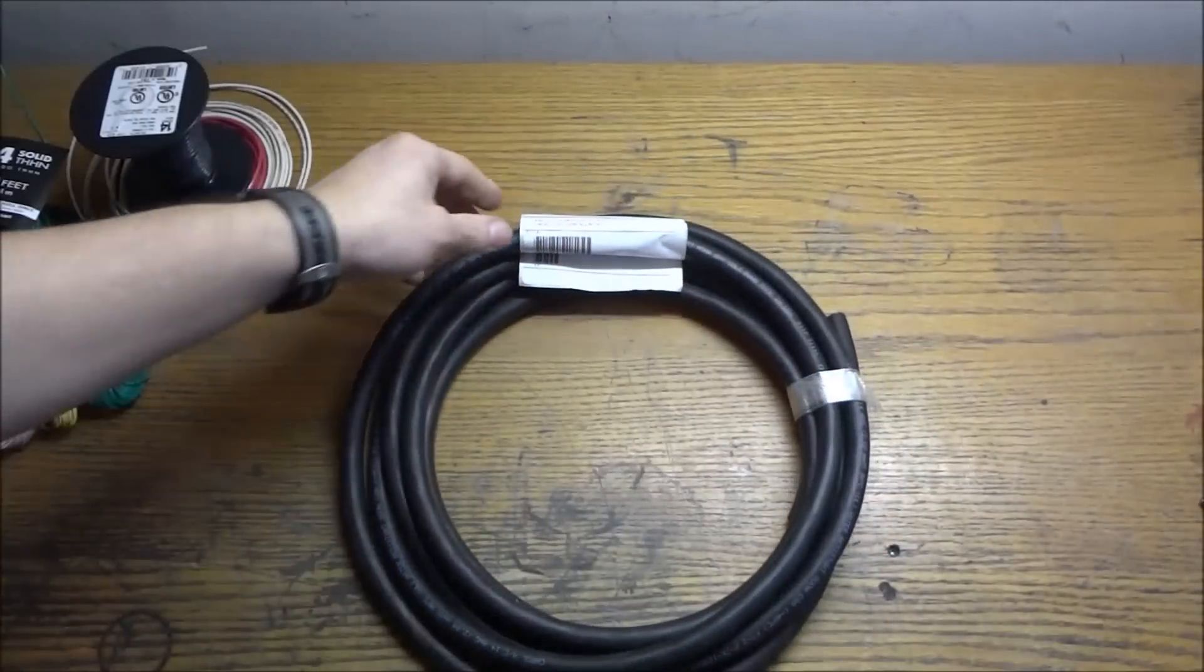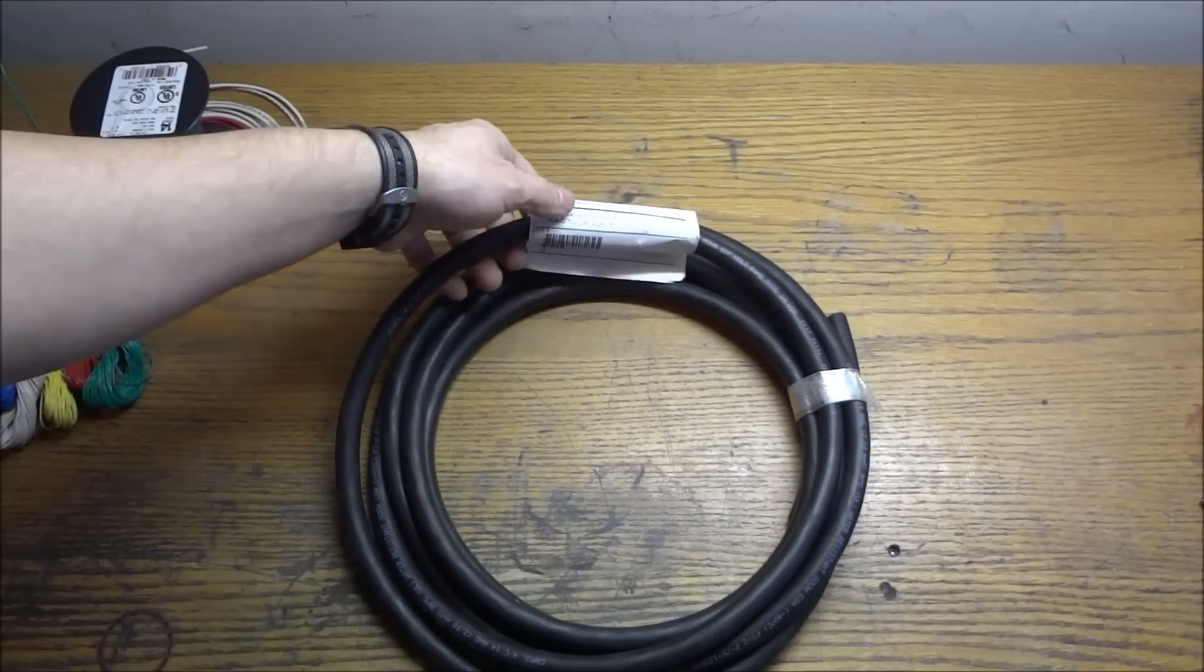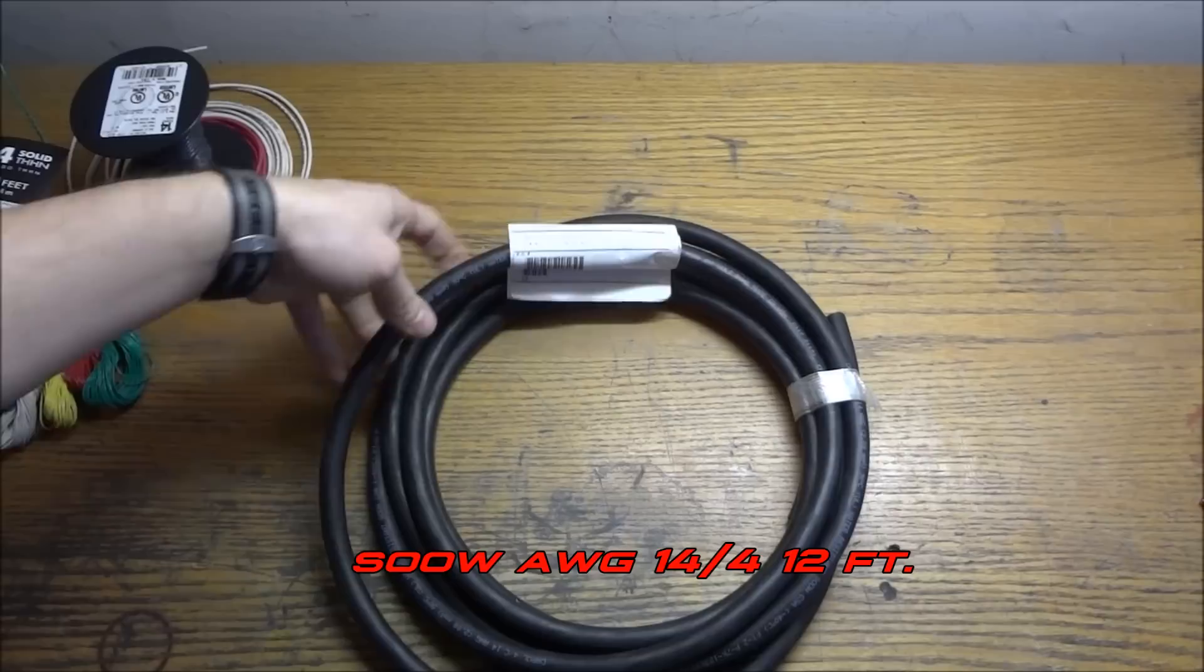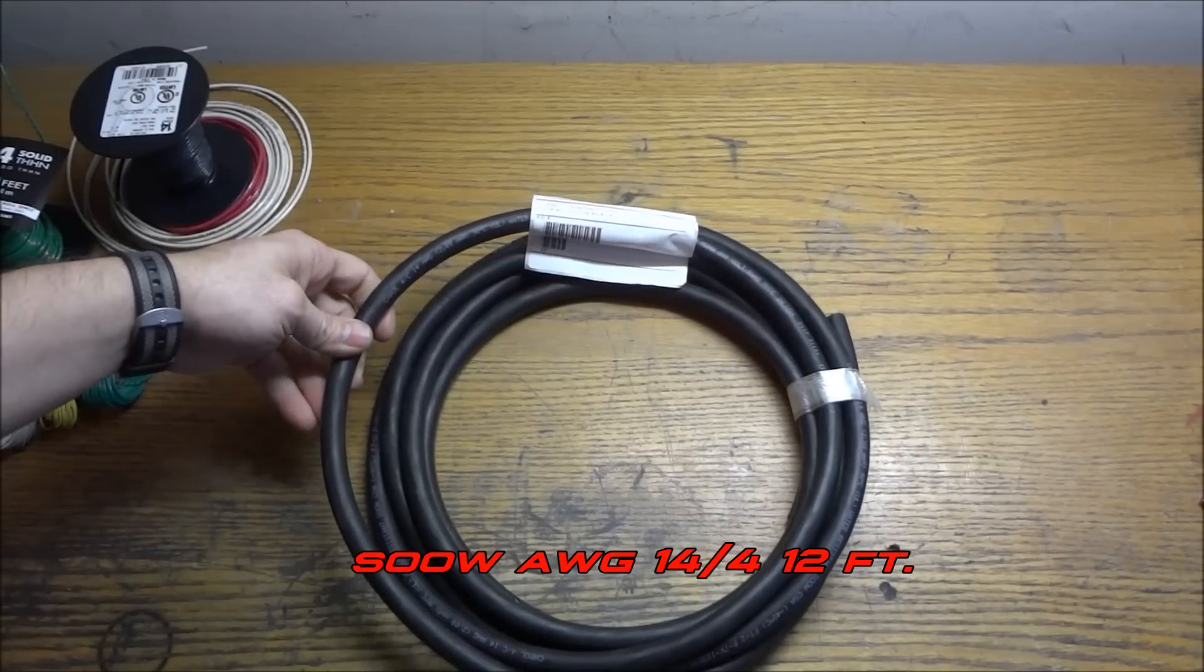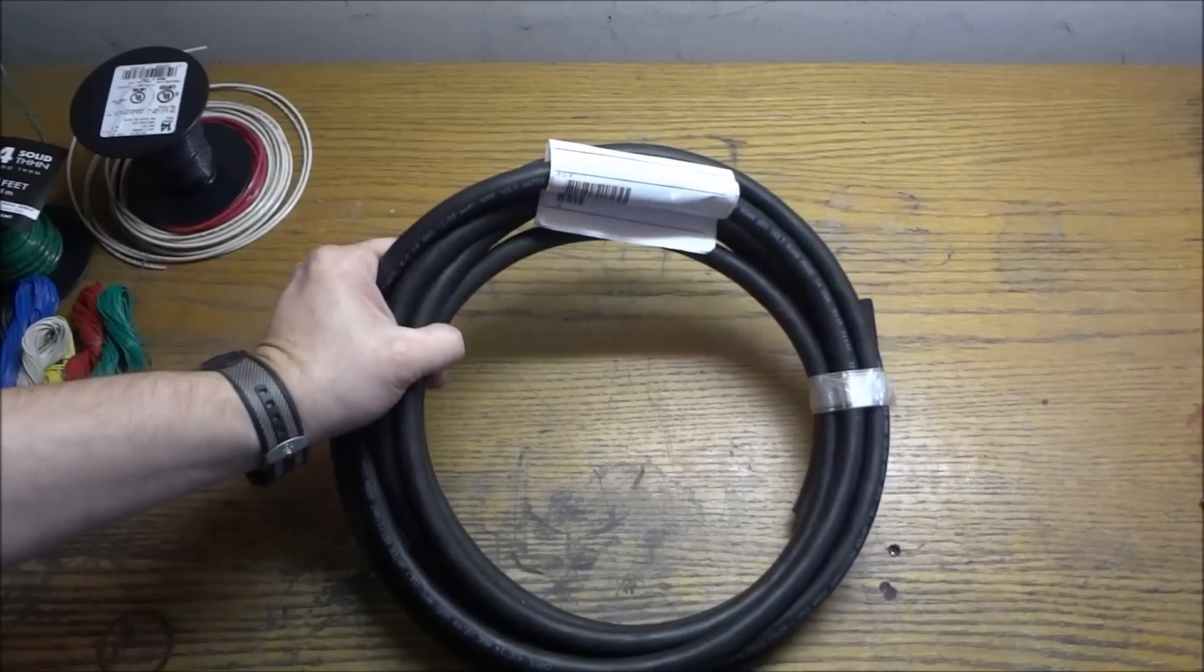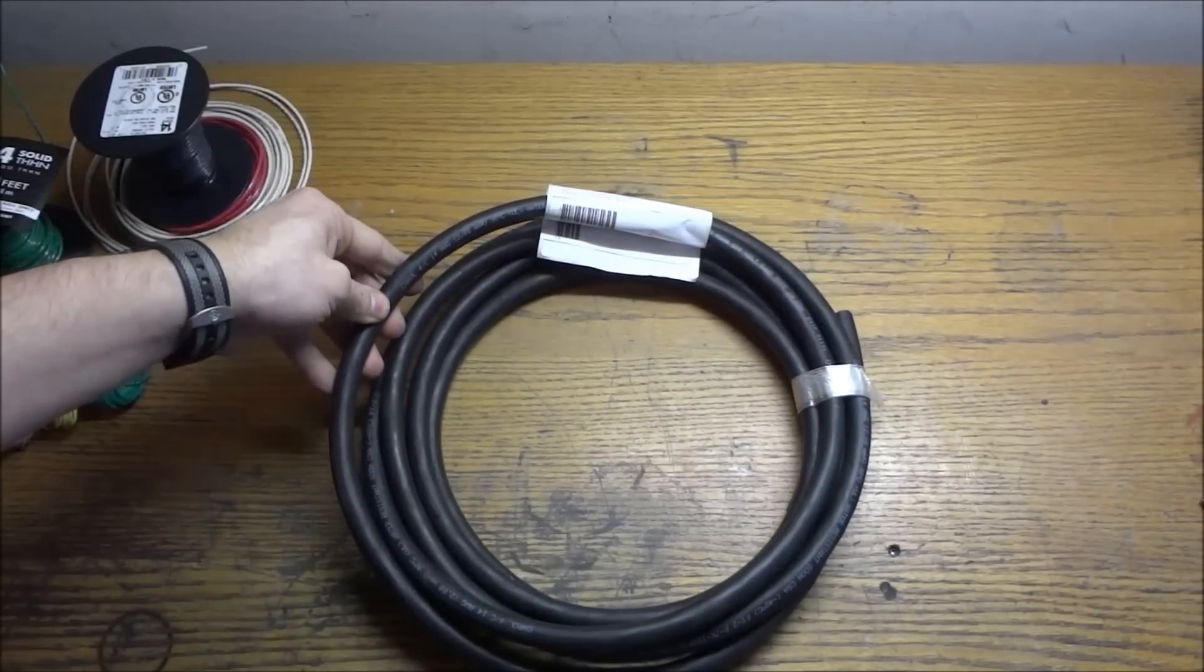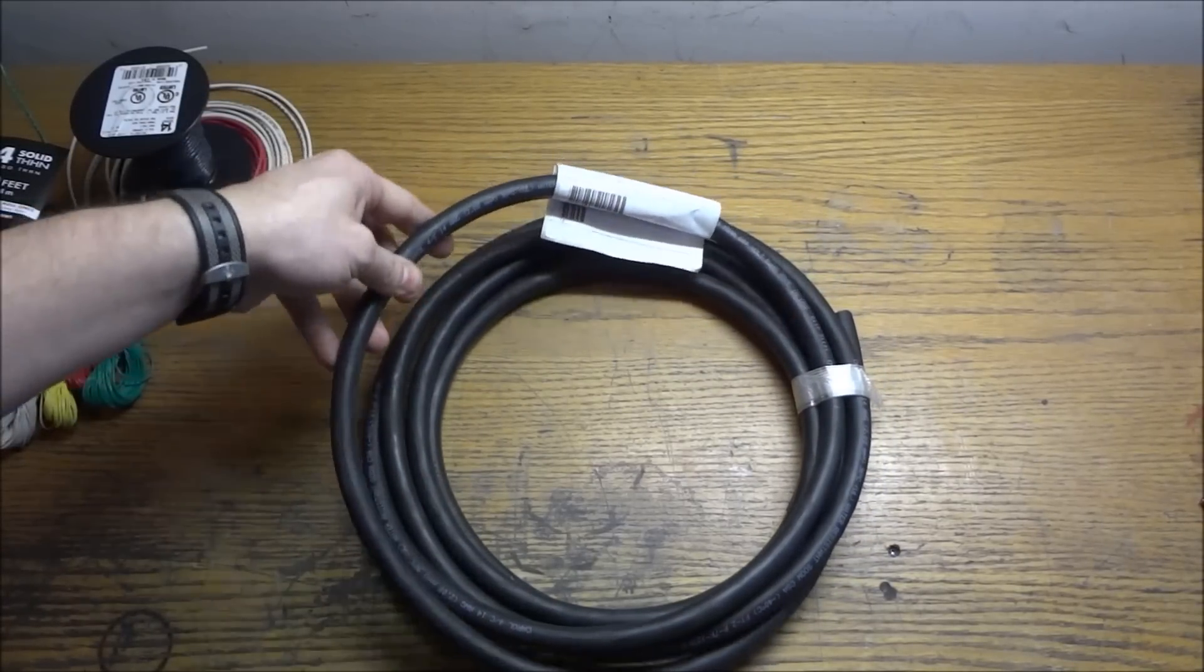Next I want to talk about our cable going to our spindle motor. This is also SOOW cord and this is 14-4 conductor for our three-phase motor and I bought just a minimum on this and I think it was 12 or 15 feet.